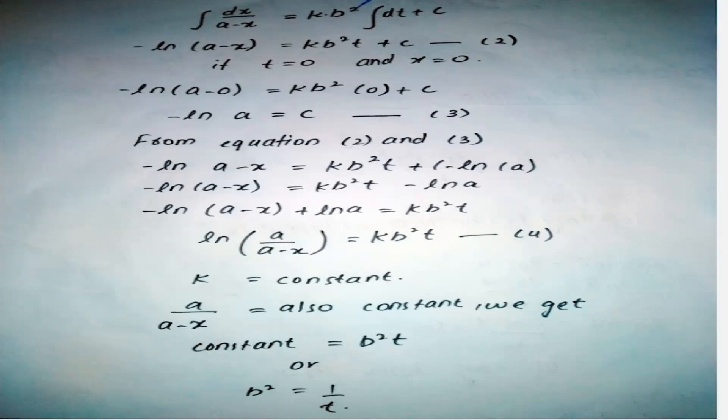In equation number four, k is constant and A/(A-x) is also constant, so we will get constant equals b²t. Or by rearranging this equation we will get b² equals 1/t.